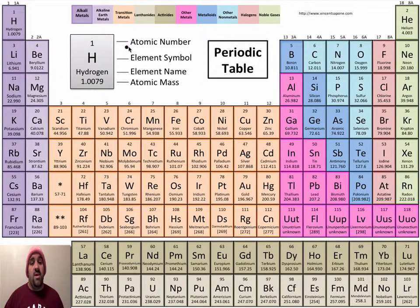we see a number, an atomic number, we see an element symbol, the name of the element, and the element's atomic mass. So let's kind of see what these mean.